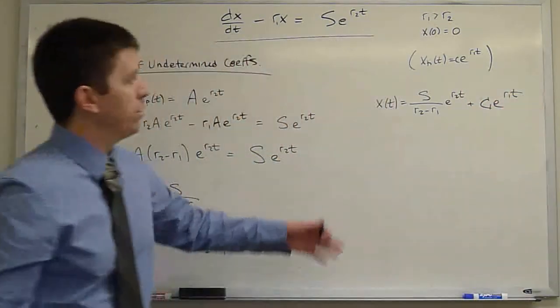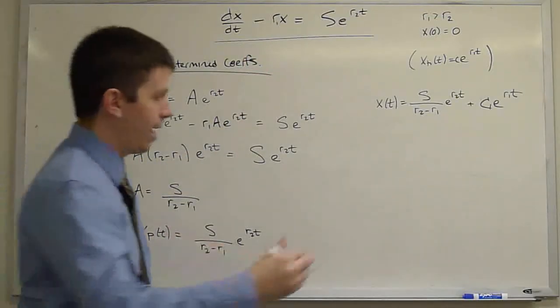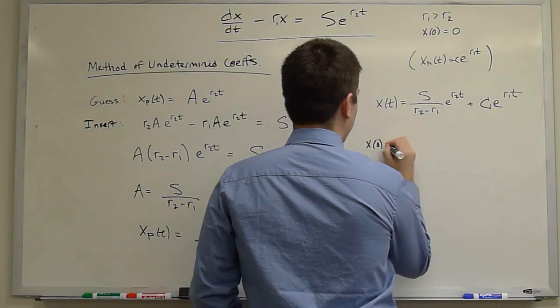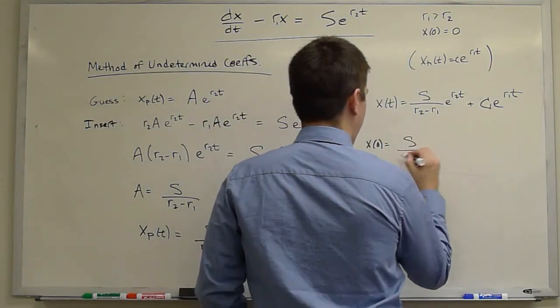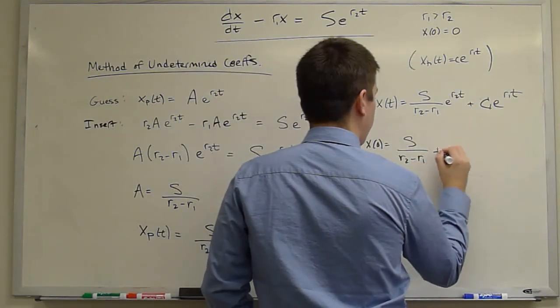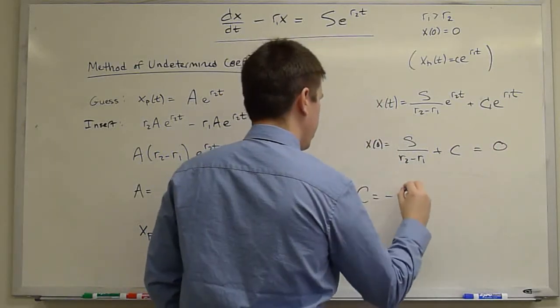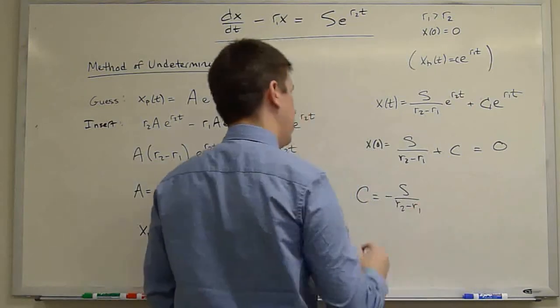And now we satisfy the initial condition, which we've done this twice already. X sub 0 equals S over R2 minus R1 plus C. That must equal 0. Therefore, C is negative S over R2 minus R1.